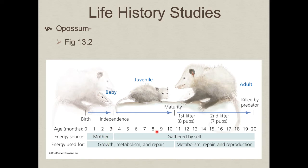At about three months, possums become independent and must forage on their own, splitting that energy for growth, metabolism, and repair. At about ten and a half months old, they become reproductively mature, so they no longer need to invest in growth, but still invest in metabolism and repair — plus a new energetic expenditure for reproduction. For a typical possum, you may reproduce for a year but often don't even make it into your second year. Keep that in mind as we move forward.